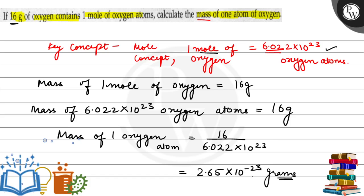That is, mass of 1 oxygen atom is 2.65 into 10 to the power minus 23 grams. And this is the solution to this question. I hope you understand it well. All the best.